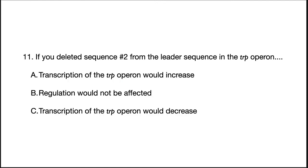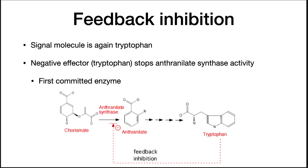Okay, that's a lot to take in, so let's see if you understand what we just talked about. If you deleted sequence number 2 from the leader sequence in the TRIP operon, what would happen? The correct answer is C. Without sequence 2 competing for sequence 3, the 3-4 termination loop would always form and transcription termination would always occur.